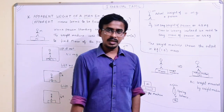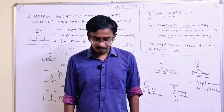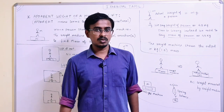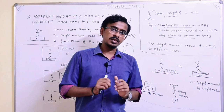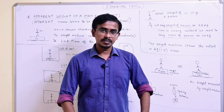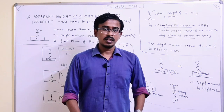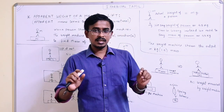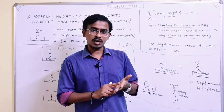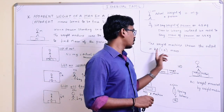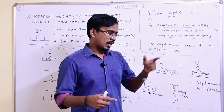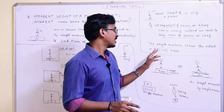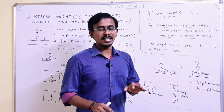Now, you are looking at a weight machine. What does a weight machine measure — 500 N or 500 kg? The weight machine shows a reading in kg, but that is basically our mass, not our weight. So weight machine shows the output in kg, and kg doesn't mean weight.